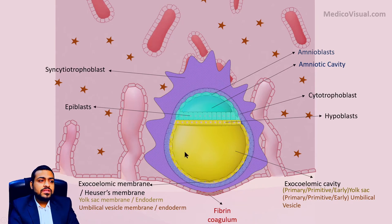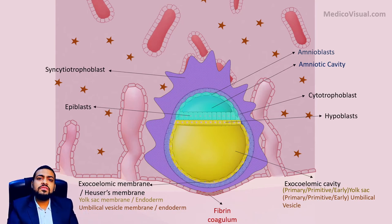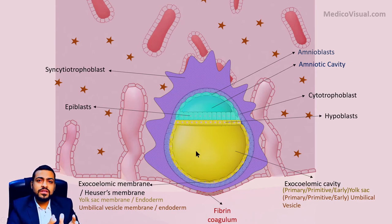Besides that, the amnioblasts and the membrane also produce certain chemicals — they have endocrine functions as well, producing certain chemicals that are required during the process of embryogenesis.